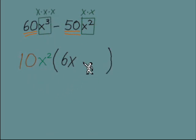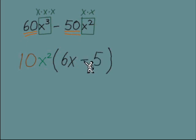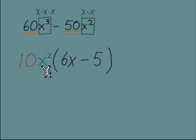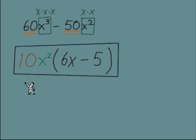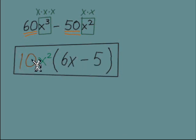For the second term: 10 times what gives us negative 50? We're going to need a negative sign in the parentheses — negative 5. For the x part: x² times what gives x²? We want to end with two x's, so no more x's are needed. This gives us our factored form: the GCF is 10x², and the terms left over are 6x from the first and negative 5 from the second.